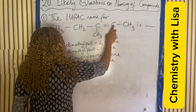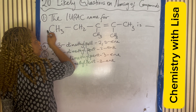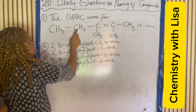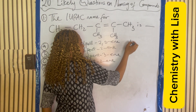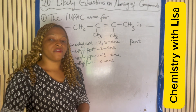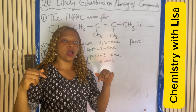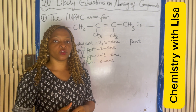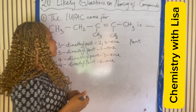So what is the longest continuous carbon chain? Counting: one, two, three, four, five. Remember, you don't count backward, you count only forward. The longest chain is five carbon atoms, which gives us 'pent.' If you don't understand this well, there are other videos in the description box on how to name organic compounds.